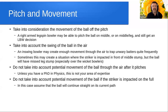Let's look at the ball pitch and ball movement — and there are some things you need to take into account and some you do not. Firstly, take into consideration the movement of the ball off the pitch. For example, a right-arm leg spin bowler may be able to pitch the ball on middle stump or middle and leg and still get an LBW decision, as they're straightening the ball in towards the batsman or moving it slightly away from the bat.